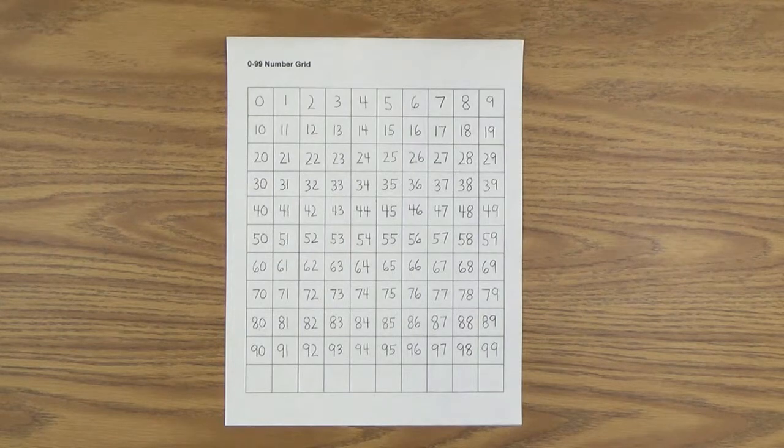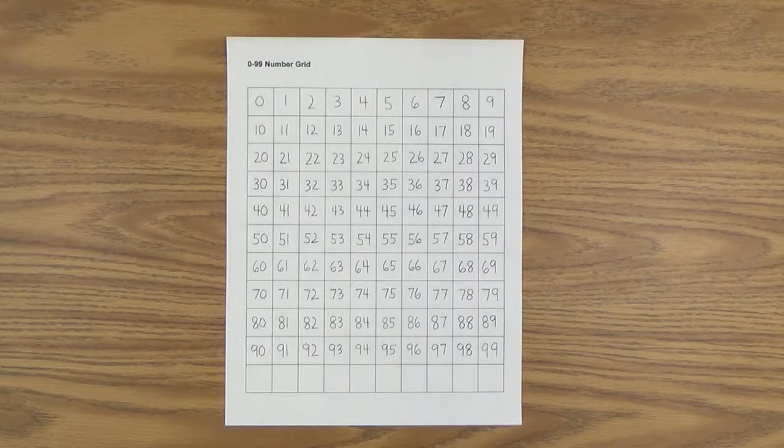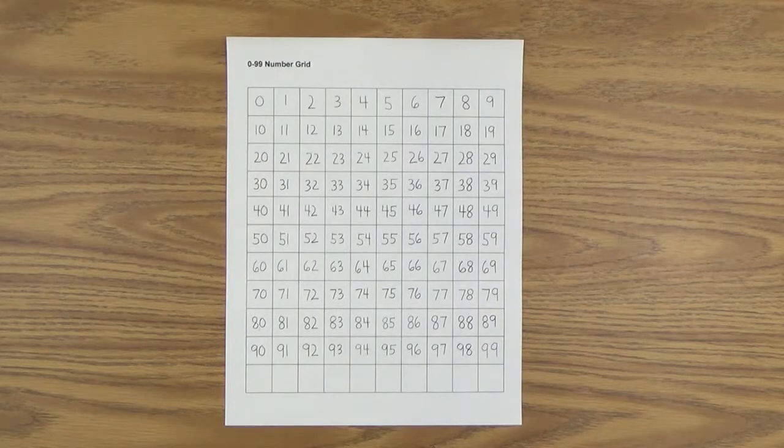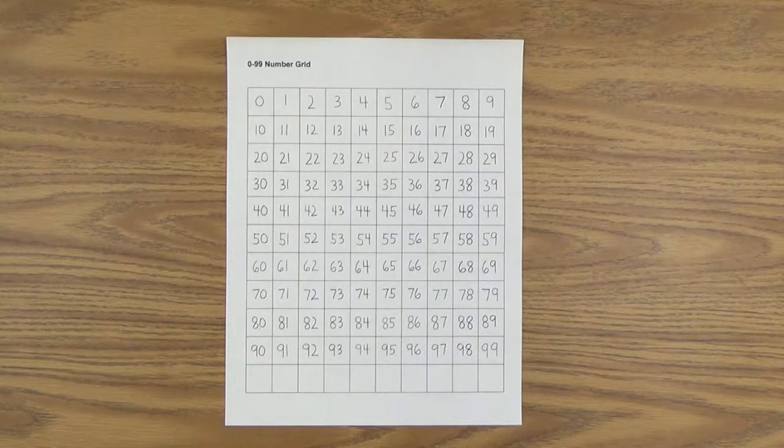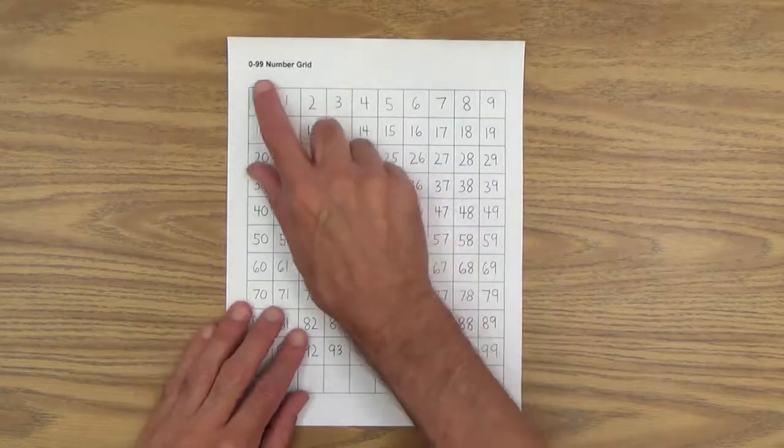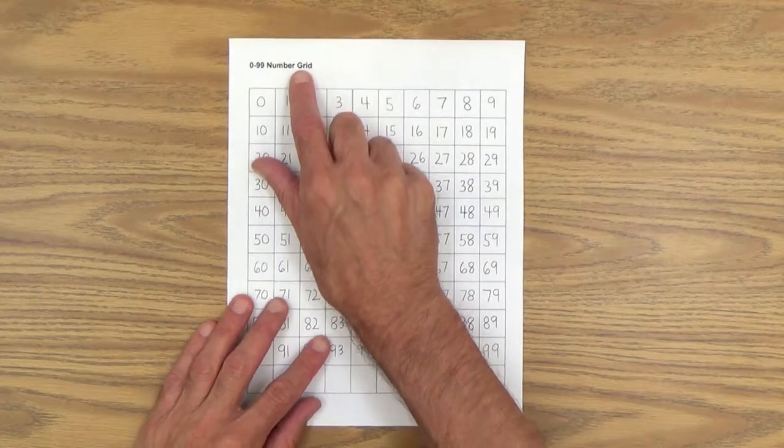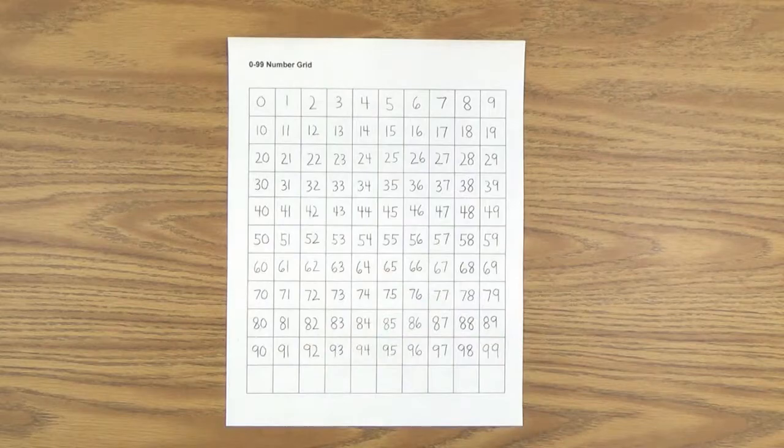And you will only need two things for this lesson. You will need a 0 to 100 number line, and we'll get to that here very shortly. And you will also need the printable 0 to 99 number grid, and of course, you can get this printable on the early gifted manual.